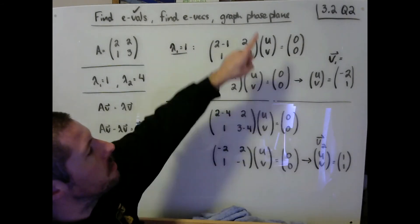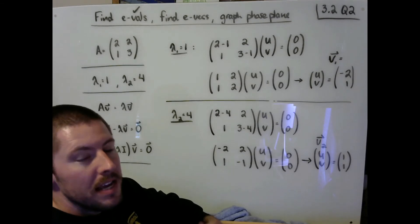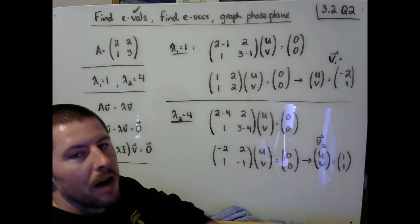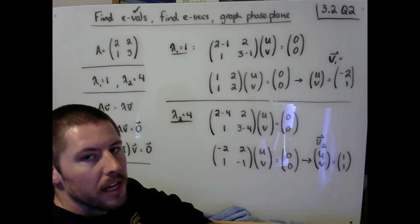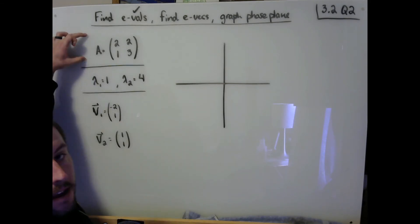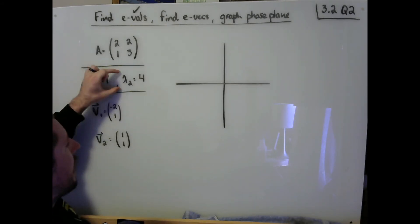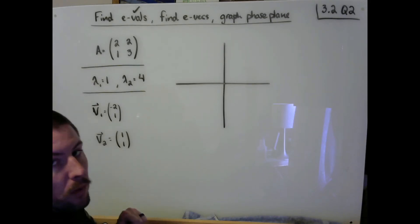we'd like to see how can we use these two pieces of information to help us graph the phase plane. Now let's go ahead and graph our phase plane. Given the matrix A, we first found our eigenvalues to be 1 and 4. We found the corresponding eigenvectors that pairs up with each of these eigenvalues. Our first eigenvalue of 1 had an eigenvector of negative 2, 1. Our second eigenvalue of 4 had an eigenvector of 1, 1.